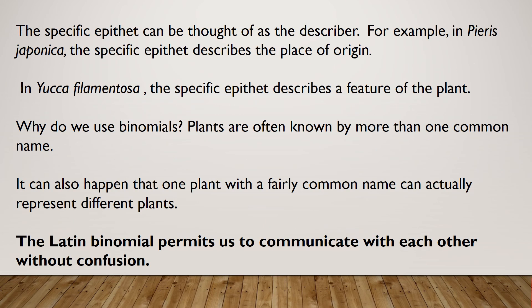The specific epithet can be thought of as a describer. For example, in Pieris japonica, the specific epithet describes the place of origin — Japan. In Yucca filamentosa, the specific epithet describes a feature of the plant: filamentosa, meaning filament. Plants are often known by more than one common name, and one common name can actually represent different plants. The Latin binomial permits us to communicate with each other without confusion.